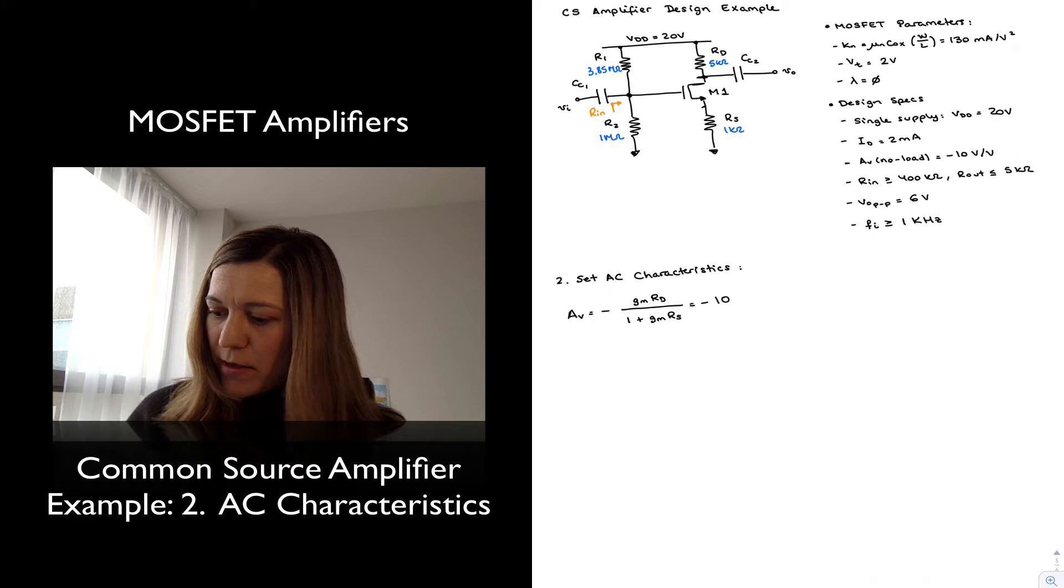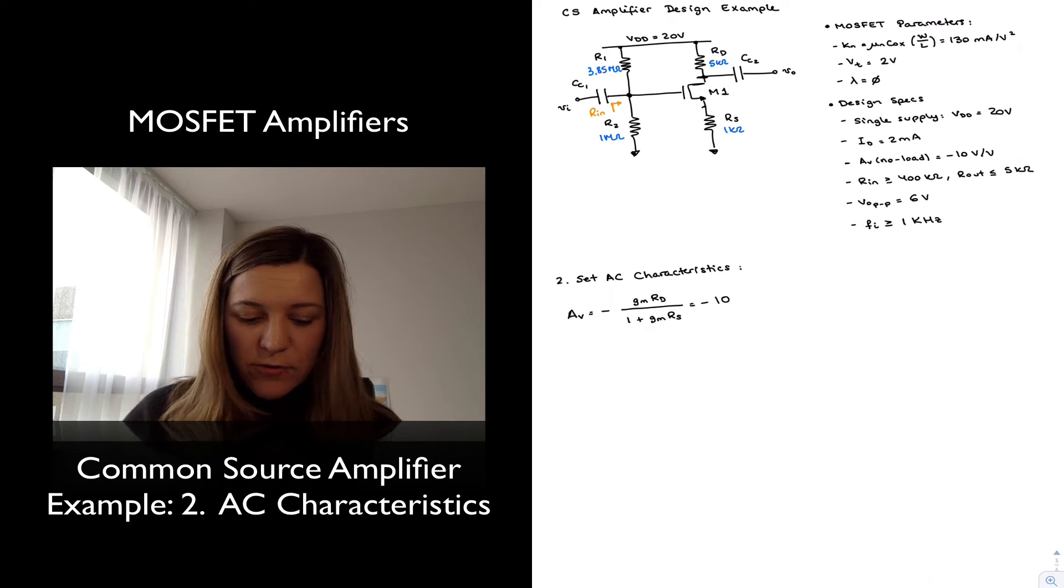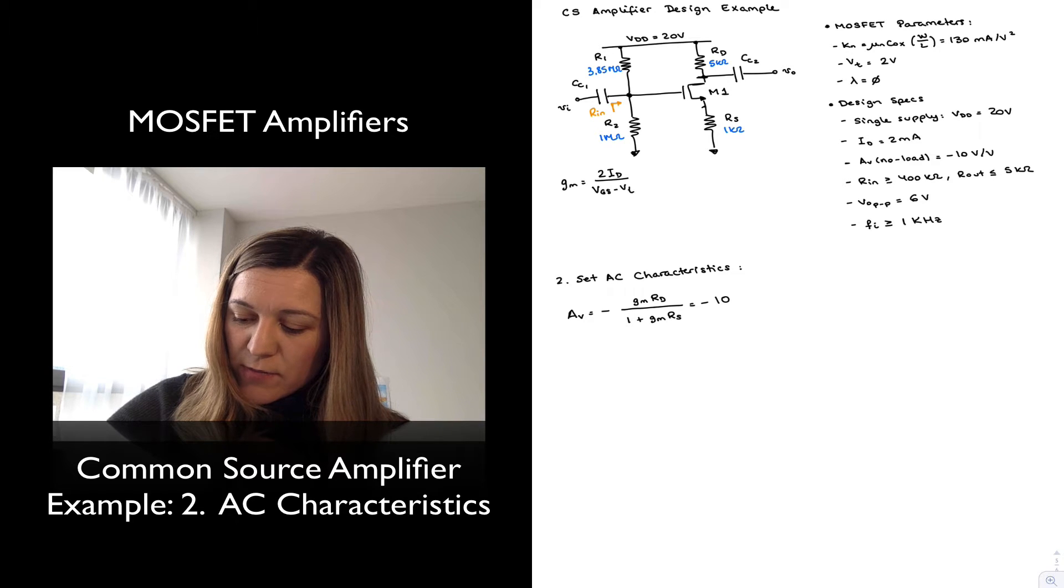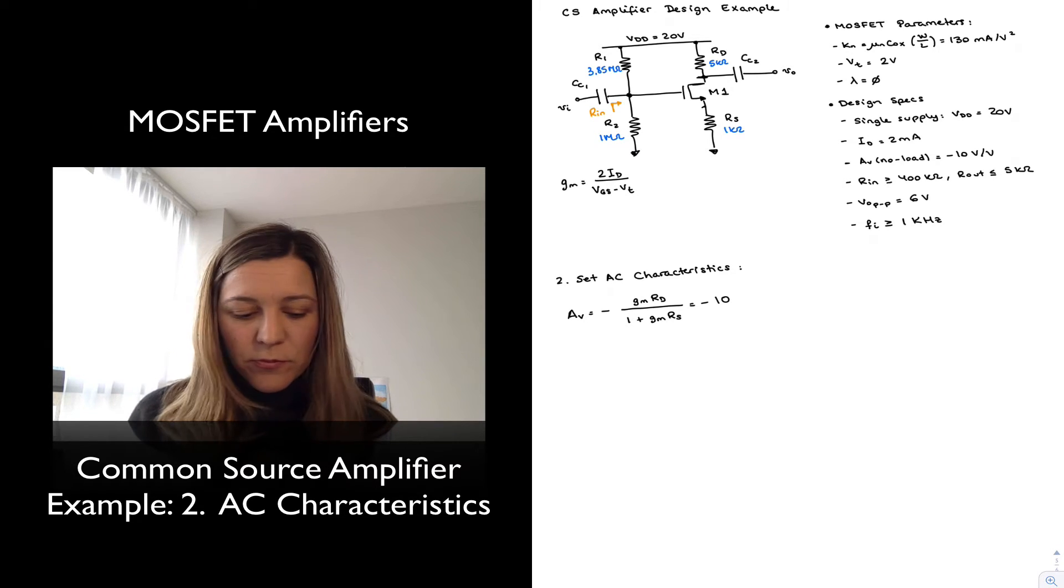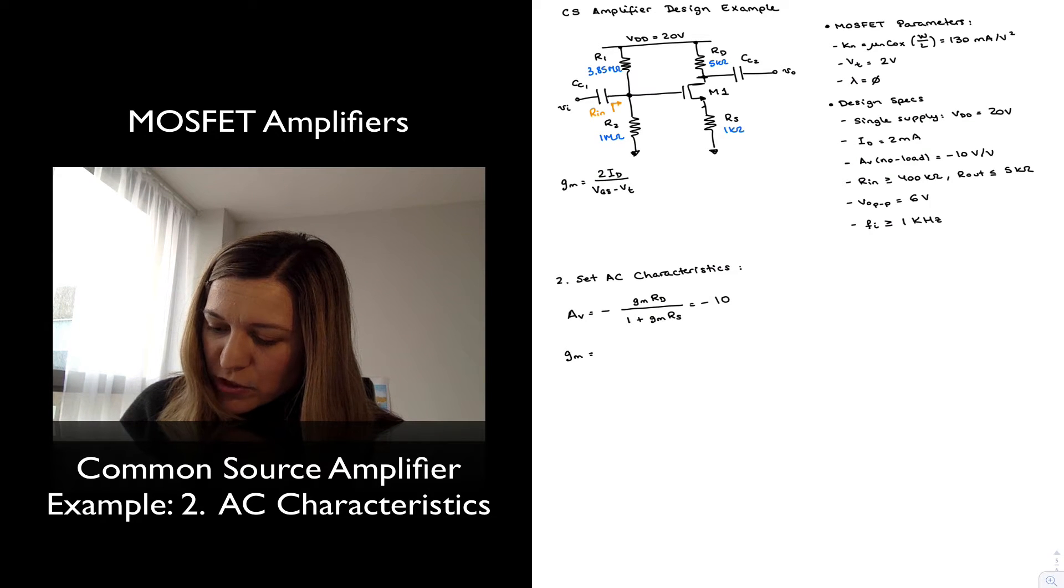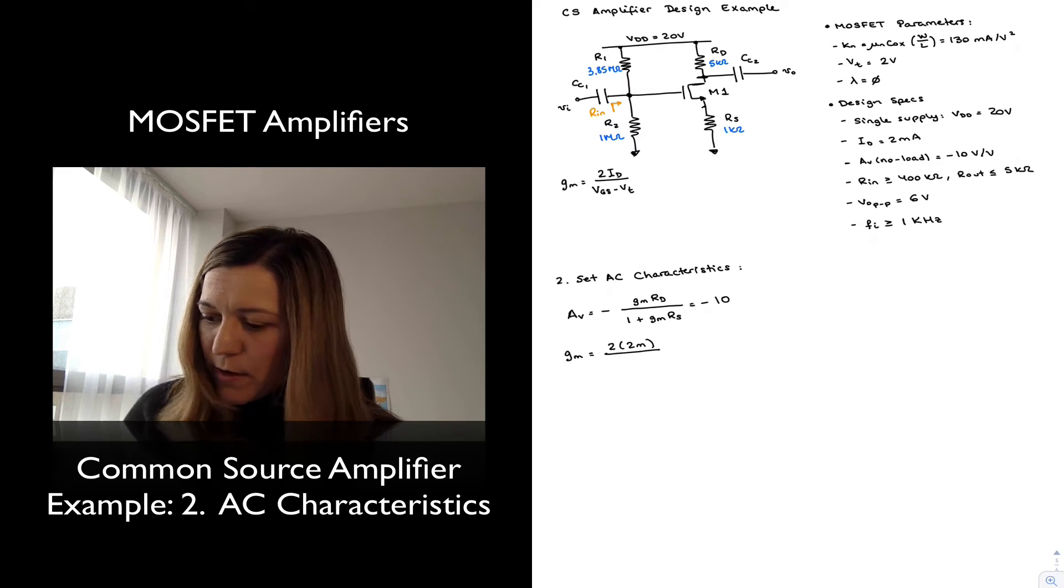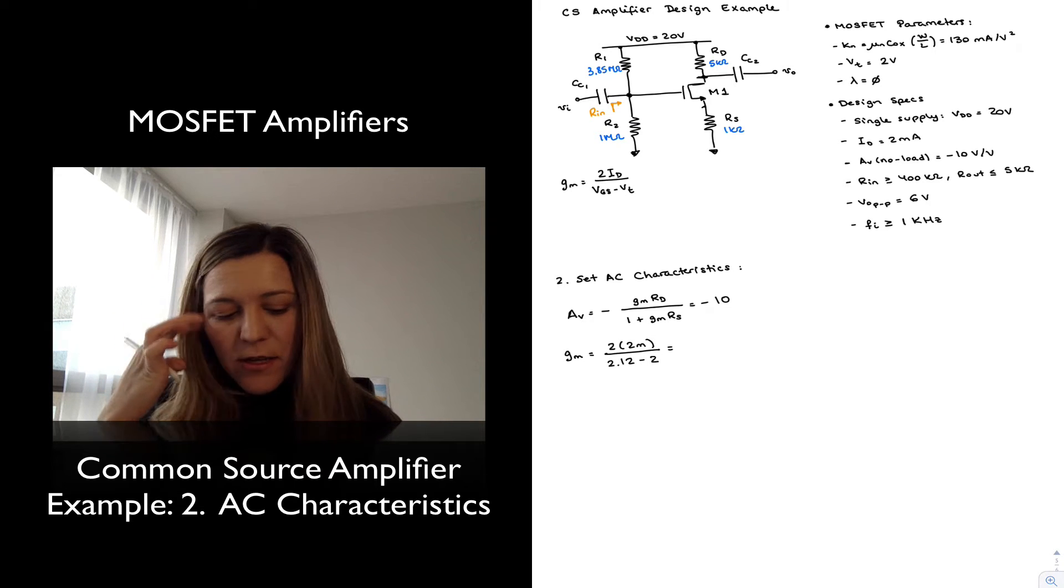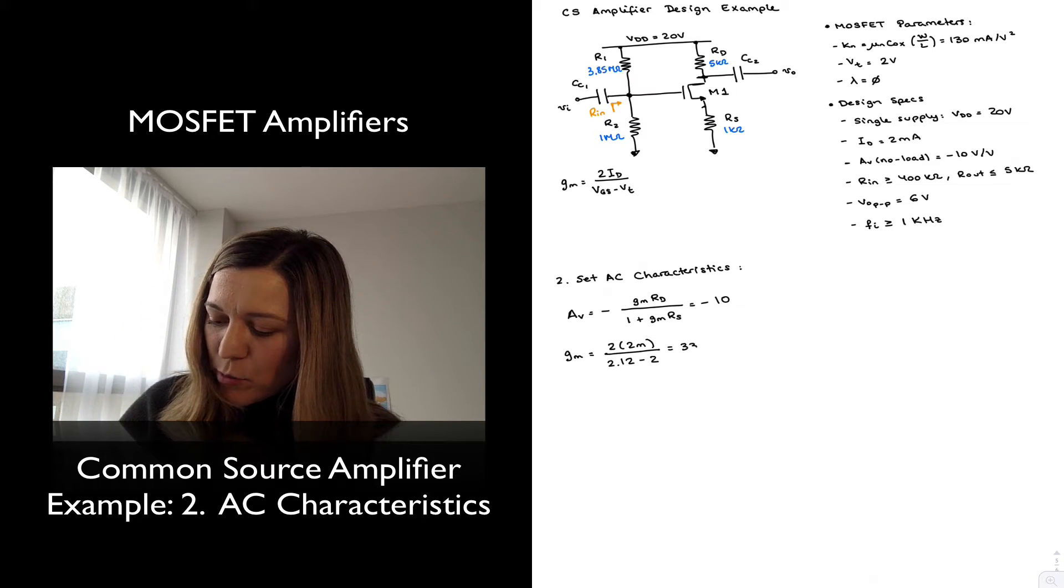And so I only have my GM, which I guess I haven't written here, but my GM parameter, I know it's going to be equal to 2 times ID divided by the overdrive voltage of VGS minus VT. That's one of the possible expressions. And so I can calculate the value for my GM in this case as being equal to 2 times 2 mA divided by VGS, which I calculated earlier to be 2.12 minus VT, which is 2, which gives me a transconductance of 33.3 millisiemens.